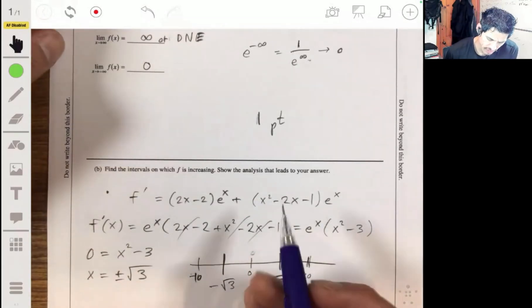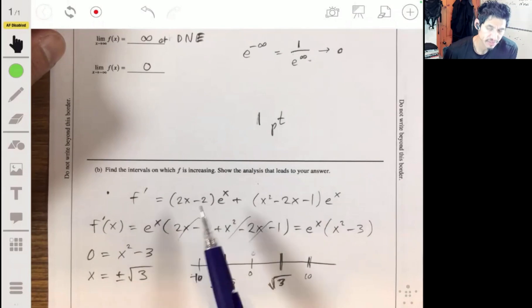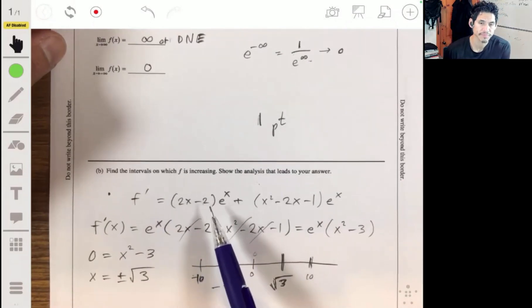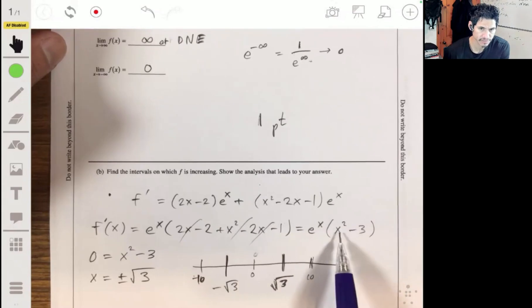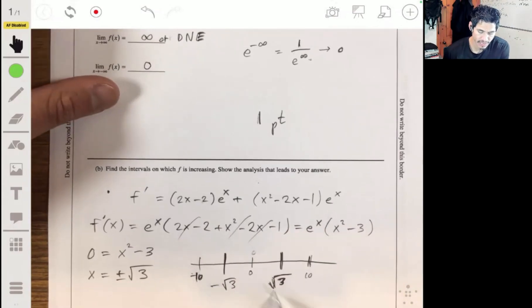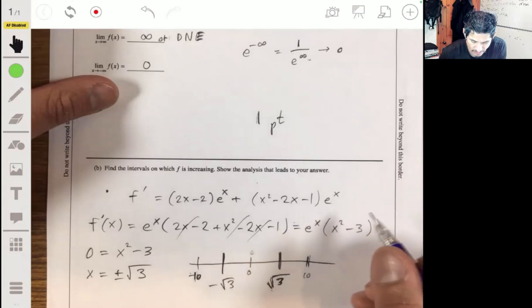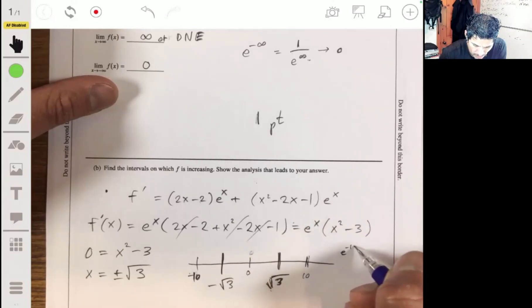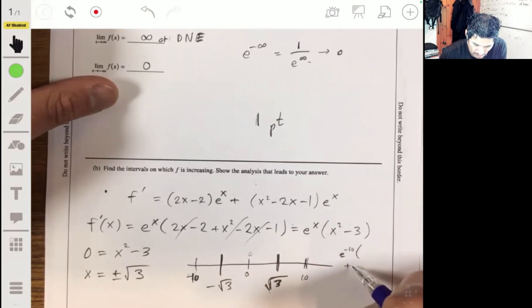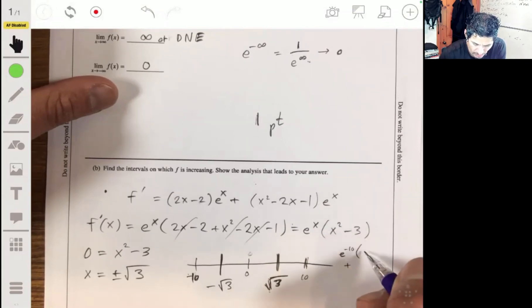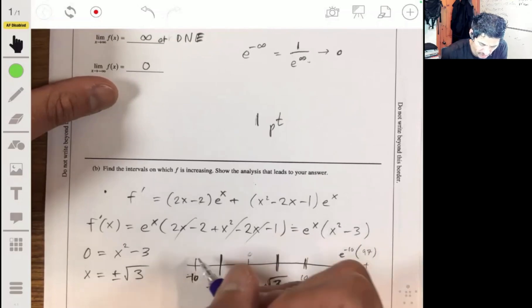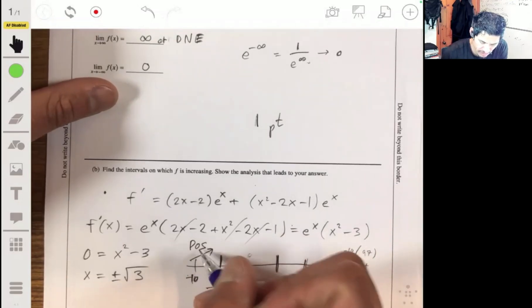So we plug in negative 10 into the derivative equation. So if we plug in negative 10, we'll get e to the negative 10. This is a positive number times negative 10 squared, 100 minus 3, we get 97, a positive times a positive. So here we have a positive number, it's going to be increasing.